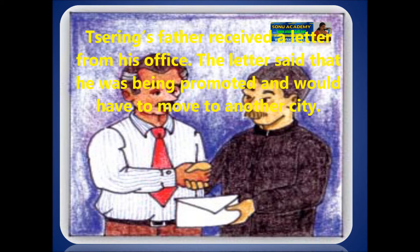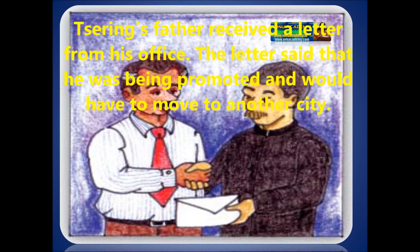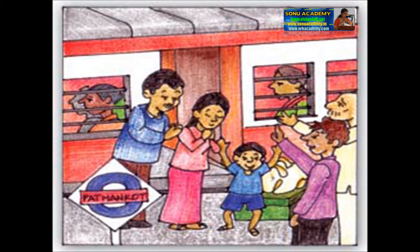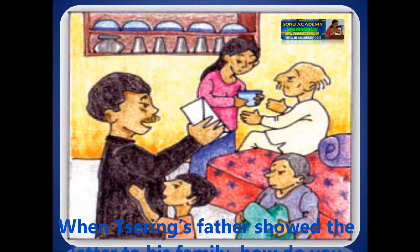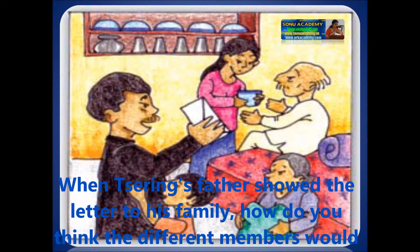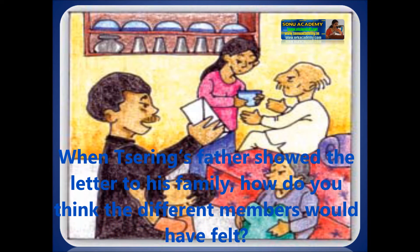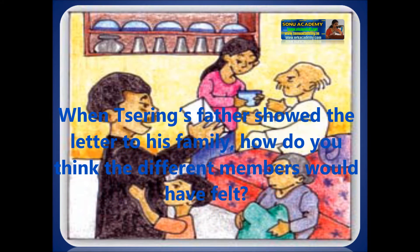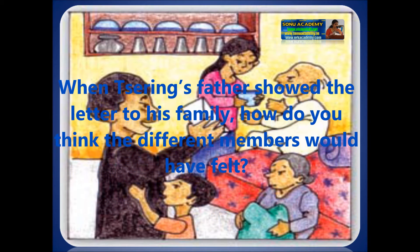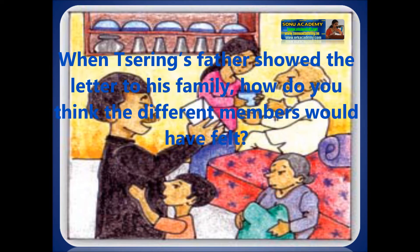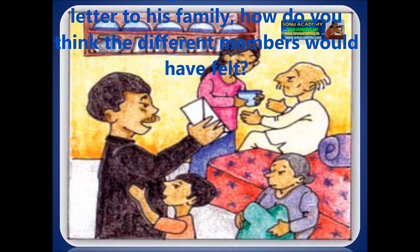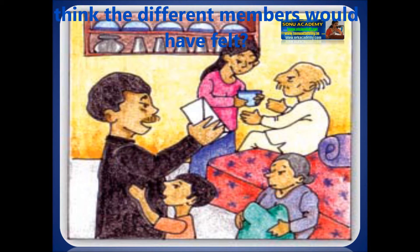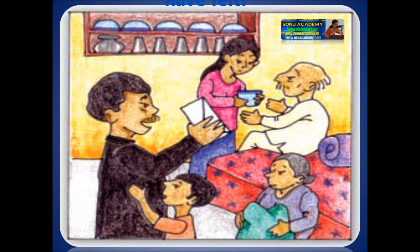Tisering's father received a letter from his office. The letter said that he was being promoted and would have to move to another city. When Tisering's father showed the letter to his family, how do you think the different members would have felt? They have to change their place, leave their relatives, and meet new neighbors when going to a new place. These types of changes take place in Tisering's family.